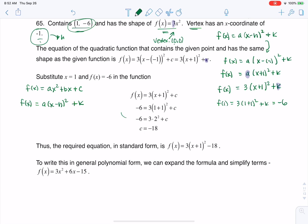So 1 plus 1 is 2, 2 squared is 4, 3 times 4 is 12. So I have 12 plus k is equal to negative 6. When I solve for k, I get k is negative 18.